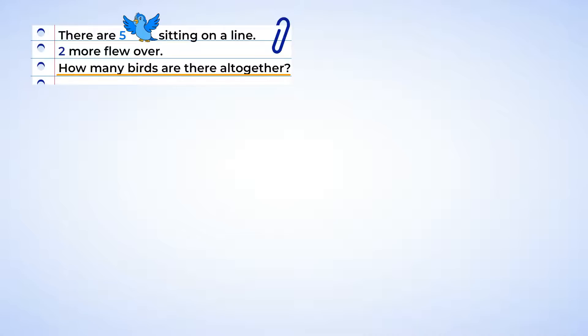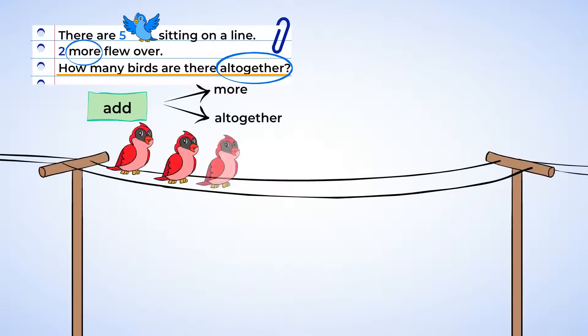First, let's look for some clues in the words. Now, the words more and all together are in the problem. And these are clues that we are going to need to add. We could also draw our own picture to help us. Will said that there were five birds sitting on a line. So should we start by drawing five birds? I think that's a great idea. Let's do it.